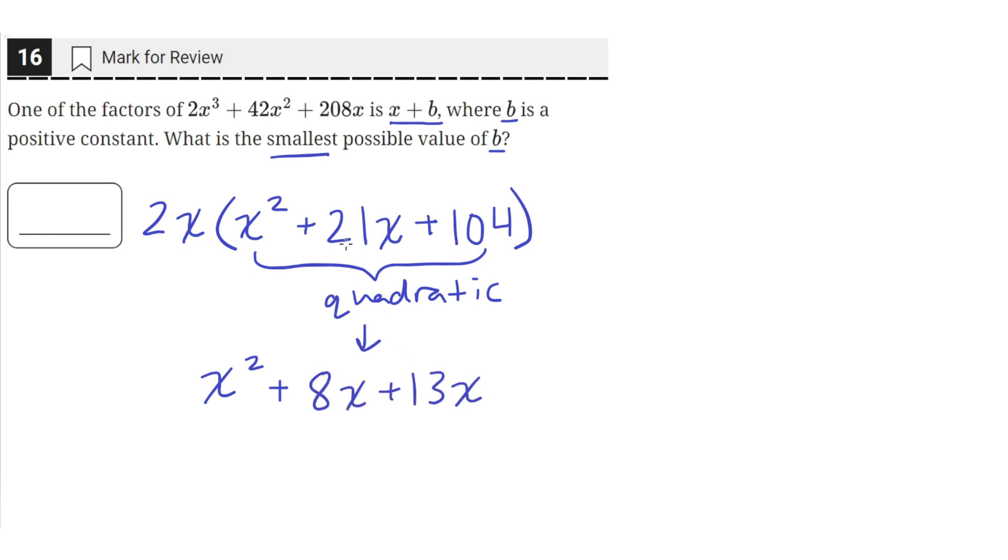So we'll split 21x into 8x plus 13x, which equals 21x, but now the coefficient of the x terms, 8 and 13, when multiplied together, equal 1 times 104. And this splitting of the x term will allow us to factor by grouping.